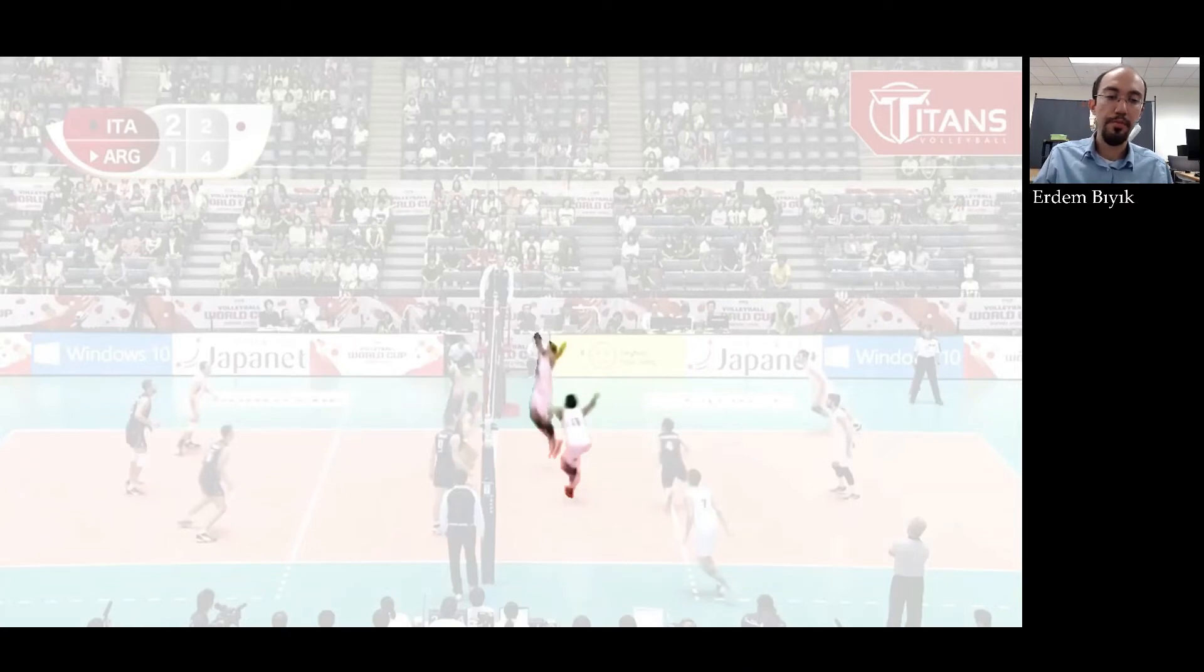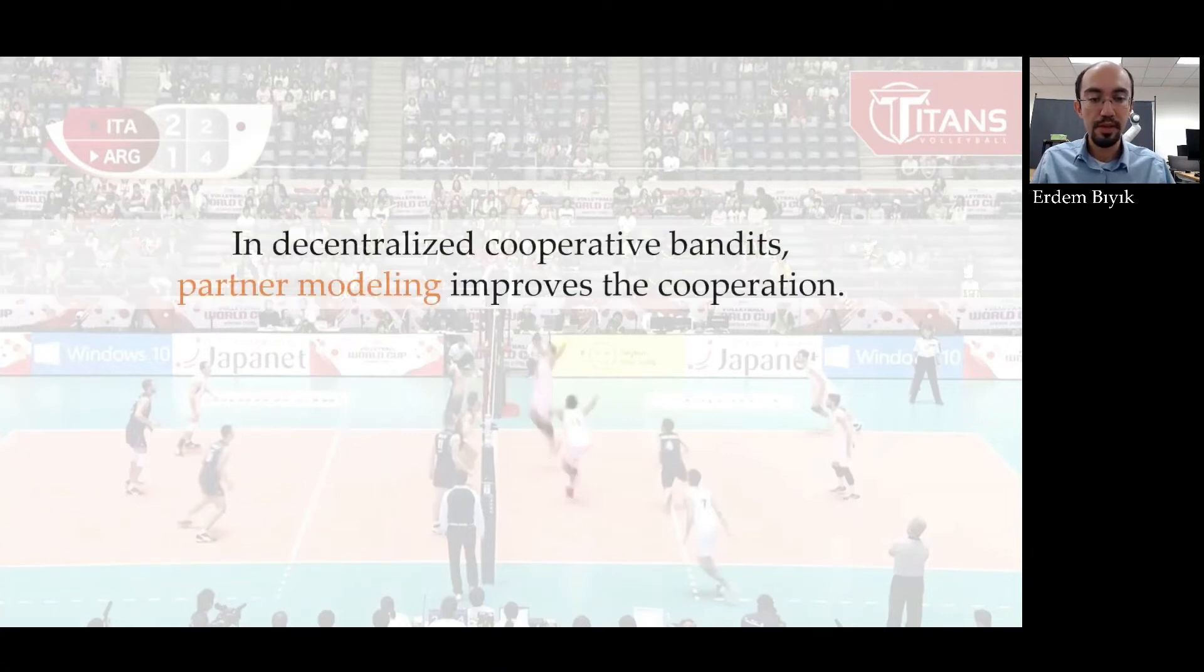Recall the volleyball example. The players were successful because they were able to predict what their teammate is going to do. And this is the insight we have in this paper. Partner modeling improves efficacy of cooperation. Specifically, we prove that if one of the agents predicts the actions of the other agent, then we can actually get logarithmic regrets.